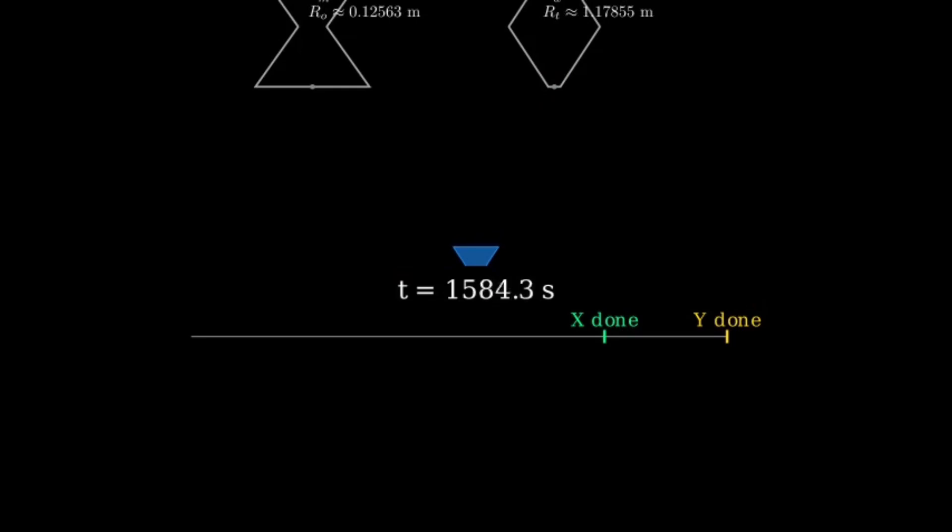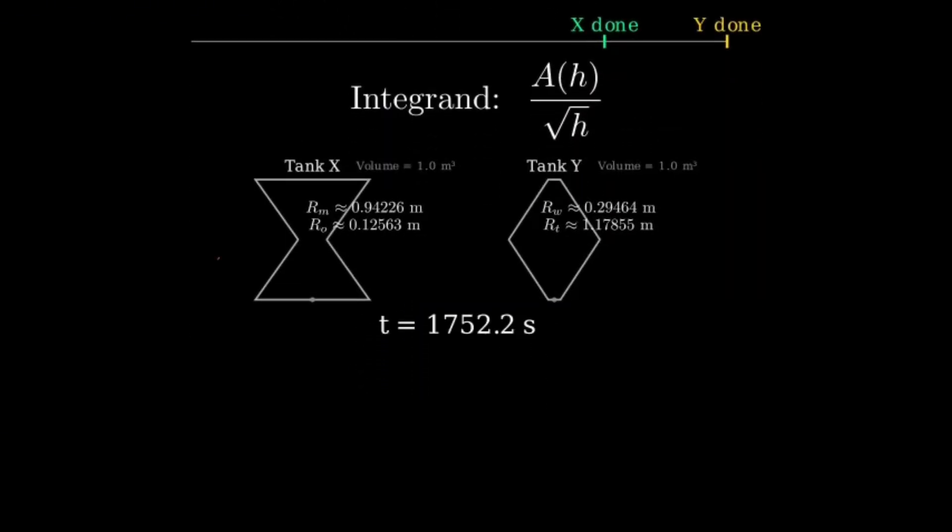The integrand is A of H divided by square root H, which weighs more heavily near small h values. A narrower area near the bottom means a smaller integral and a faster emptying. Why does Tank X empty before Tank Y? The emptying time is proportional to the integral of A of H over square root H from 0 to H. Because of the 1 over square root H, the parts of the tank near small h, that is near the bottom, are weighted more heavily. Tank X has a smaller cross-section near the bottom thanks to its narrow waist, so its integral is smaller, and that makes its emptying time shorter. Tank Y has more area near the bottom, so it stays heavy longer and empties later.